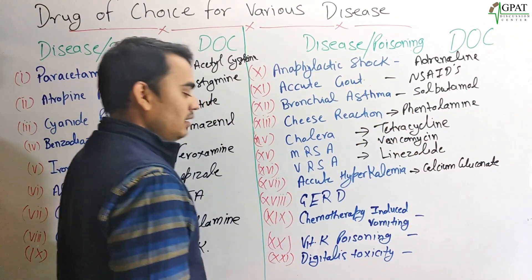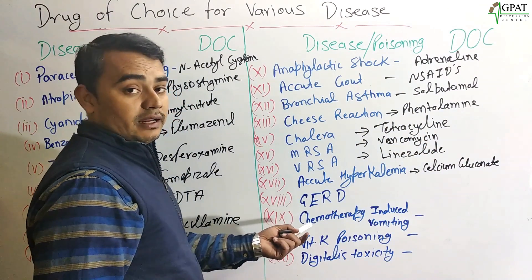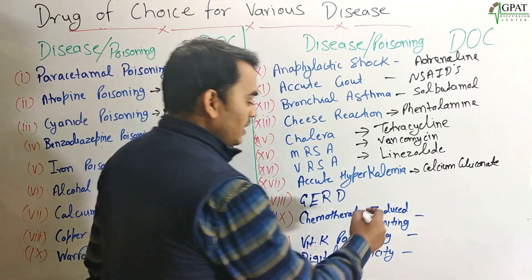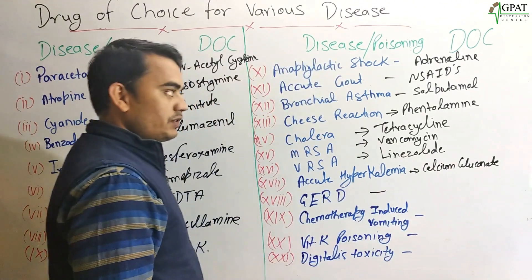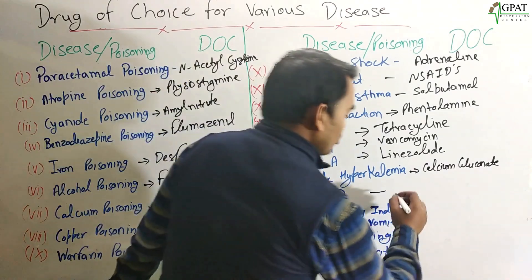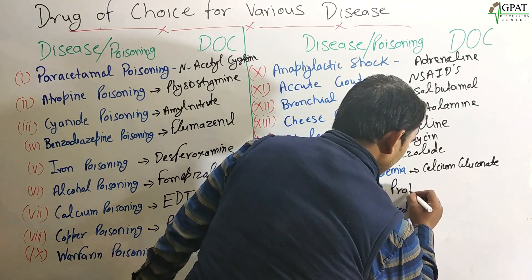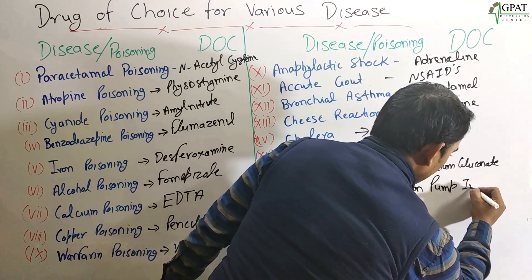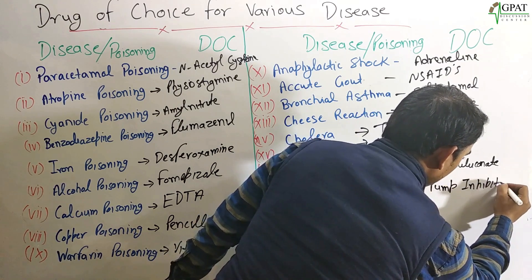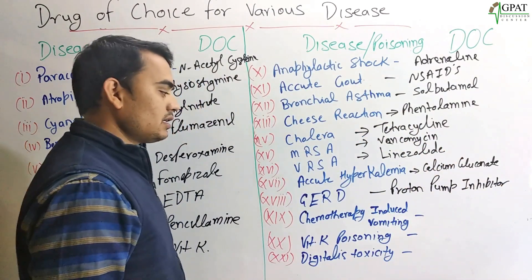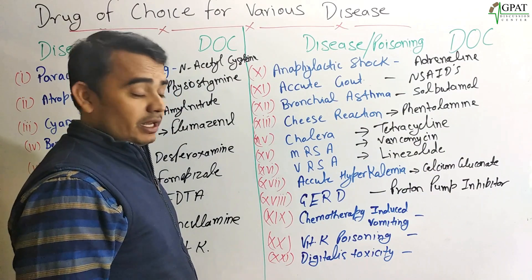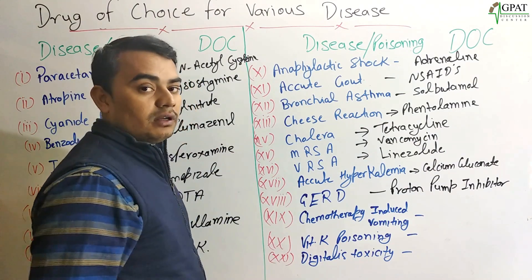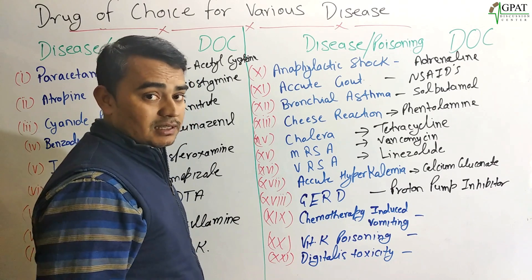Next: Acute Hyperkalemia. For acute hyperkalemia, Calcium Gluconate is the drug of choice. Next: GERD — Gastroesophageal Reflux Disease. For GERD, the drug of choice is the Proton Pump Inhibitor.